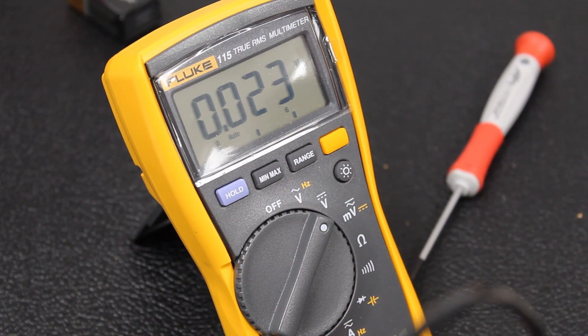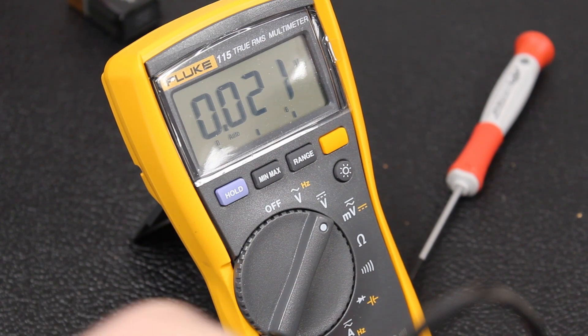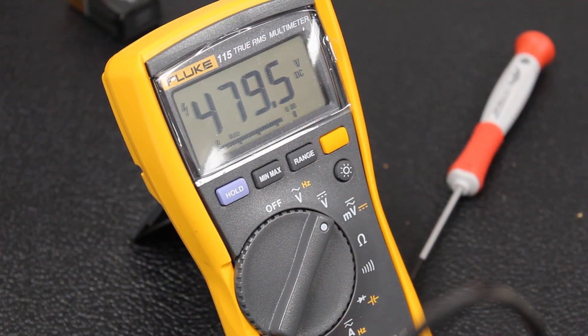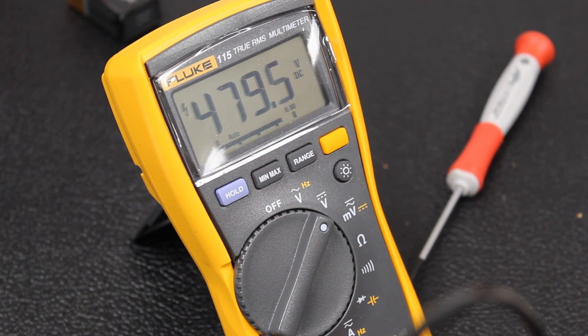When the amp is in standby, you will not see any voltage on the plates, but the tubes will begin to warm up. Once the tubes are warm, you can switch standby off and the plate voltage will be present.